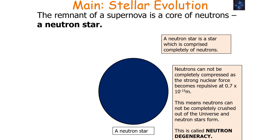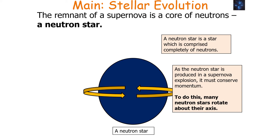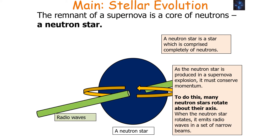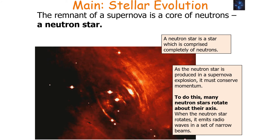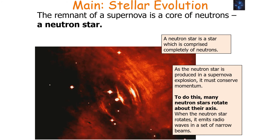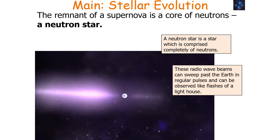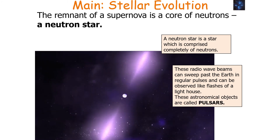Neutron stars form by the principle of neutron degeneracy. As the neutron star is produced in a supernova explosion, it must conserve momentum — so many neutron stars rotate about their axes, up to 600 times per second. When they do this, the neutron star emits radio waves in a set of narrow beams, due to the interaction of the magnetic field with the rapid rotation, leading to large electrical fields which accelerate particles to high energy, causing them to decay into radio waves and electron-positron pairs. These radio waves can sweep past the Earth in regular pulses, observed like flashes of a lighthouse — these objects are called pulsars.